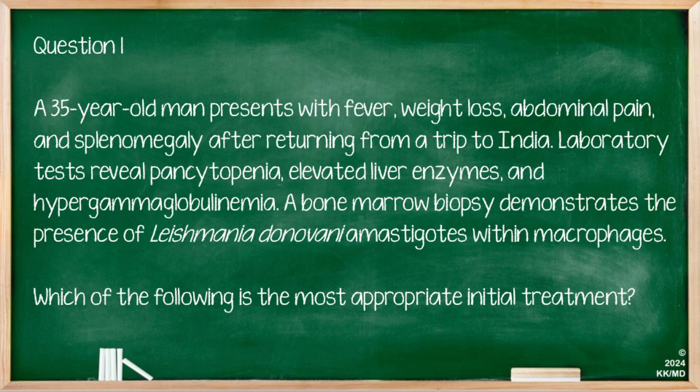Let's do some questions. A 35-year-old man presents with fever, weight loss, abdominal pain, and splenomegaly after returning from a trip to India. Laboratory tests reveal pancytopenia, elevated liver enzymes, and hypergammaglobulinaemia. A bone marrow biopsy demonstrates the presence of Leishmania donovani amastigotes within macrophages. Which of the following is the most appropriate initial treatment?